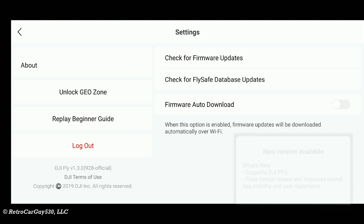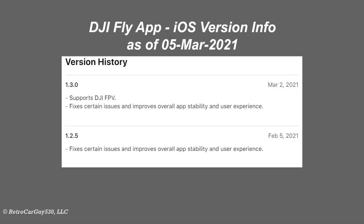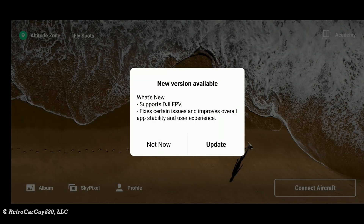That's what we have on the Android platform. I checked on the App Store for iOS updates, and as of March 5th, 2021, midday Pacific time, it still shows version 1.3.0 on March 2nd, 2021, with the same support DJI FPV, fixes certain issues and improves overall app stability and user experience — just like the 1.3.0928-official for Android, as well as the 1.3.0925-official. So it's unclear what it actually fixes on the Android side. There's no real declaration of what that is, and there's no update on iOS at this point.